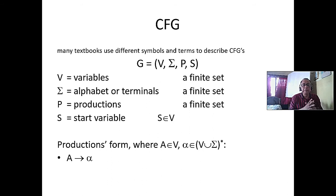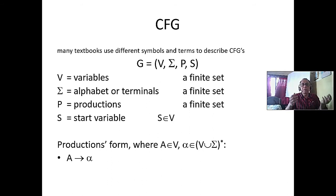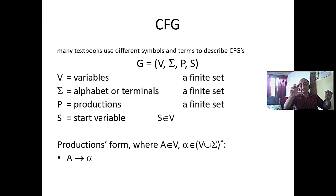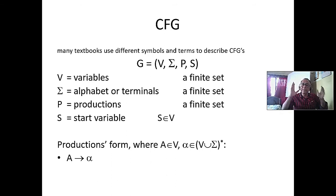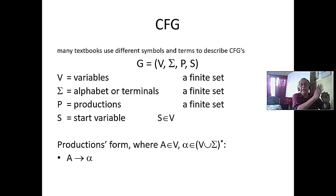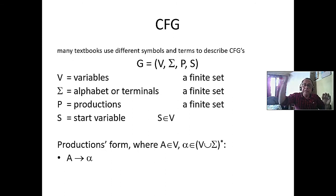a^100 b^100 is a regular grammar. For every 'a' you go through 100 states, and for every 'b' you go through 100 states. Even a^{1,000,000} b^{1,000,000} is a regular grammar. But whenever you say a^n b^n where n can be any number, then you need a stack - that is why it becomes a context-free grammar.